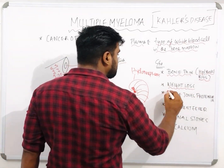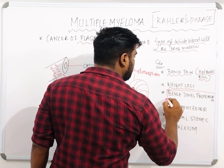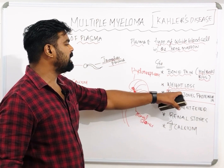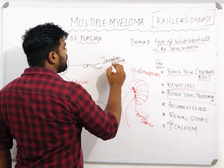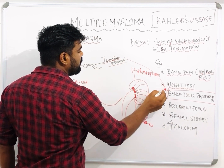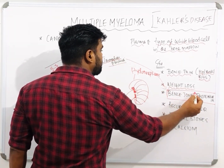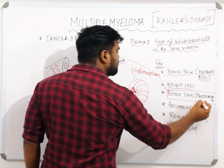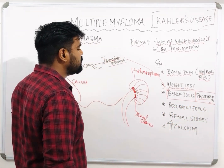The most classical feature of multiple myeloma is what we call Bence-Jones proteinuria. Immature plasma will produce some protein in the body — that protein we call Bence-Jones protein. It will be released through the urine, which we call Bence-Jones proteinuria.